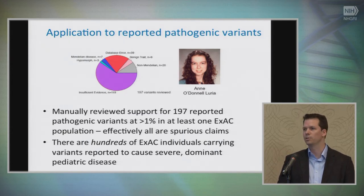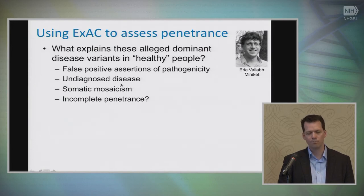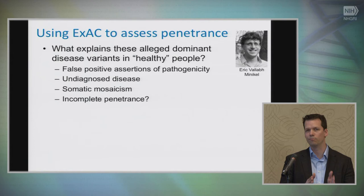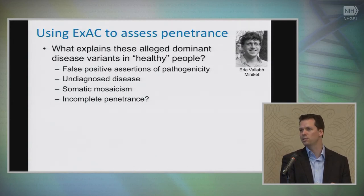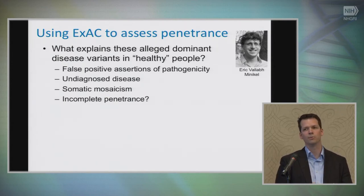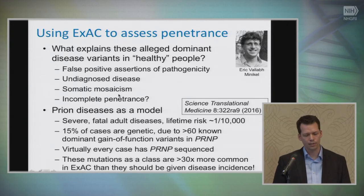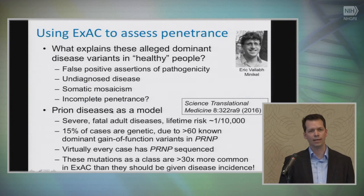There are multiple possible explanations. First, many of these are likely false assertions of pathogenicity. It's also possible that some are present in undiagnosed cases of disease within EXAC. We have identified some examples of somatic mosaicism, where a variant is present in a person's blood at low allele balance, suggesting it's increased in frequency within their blood cells but is not present in other tissues. And finally, and I think importantly, there's the possibility that the variant is indeed disease-causing and carried by that individual, but there is incomplete penetrance — for whatever reason, that person is not actually suffering from that disease.